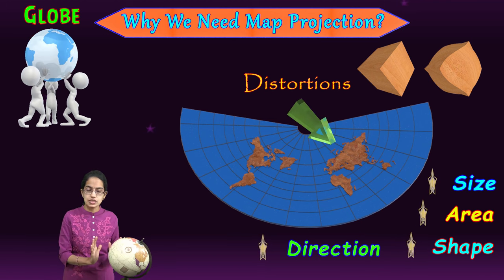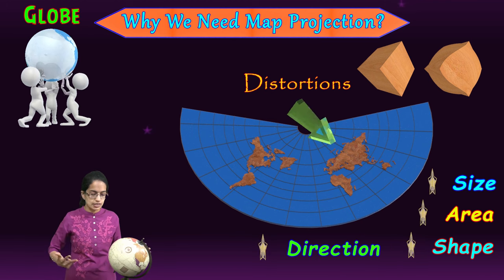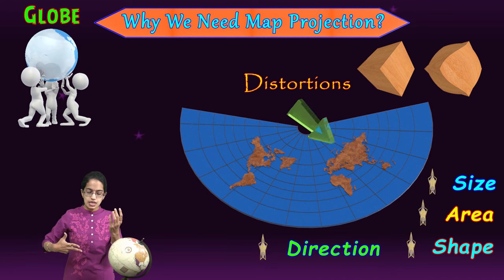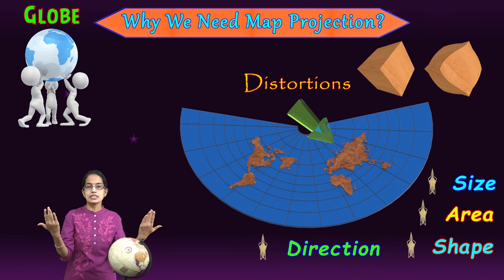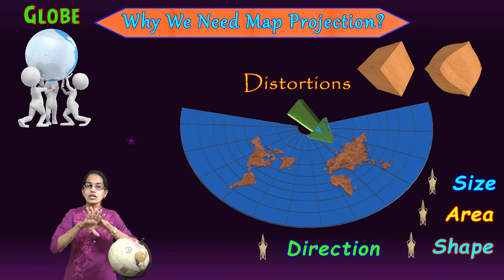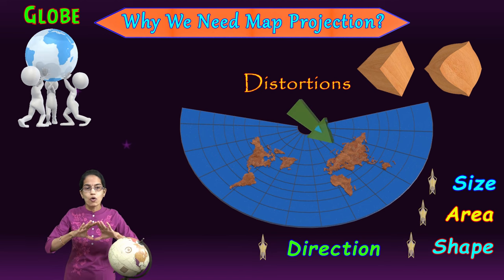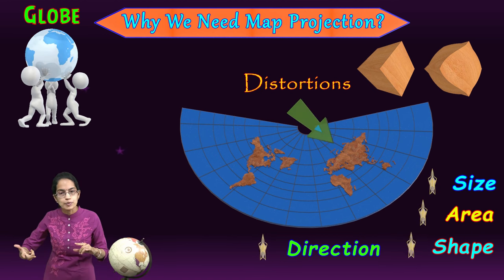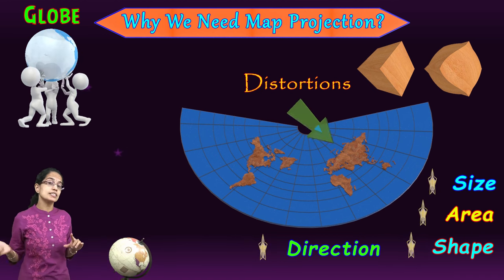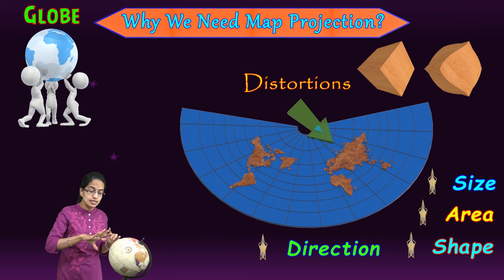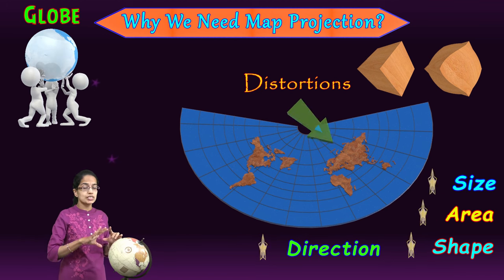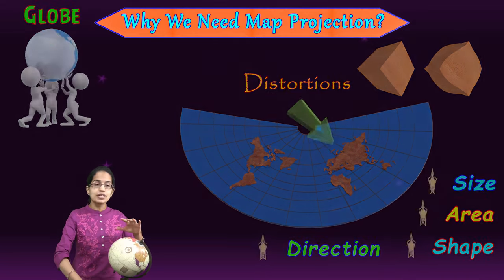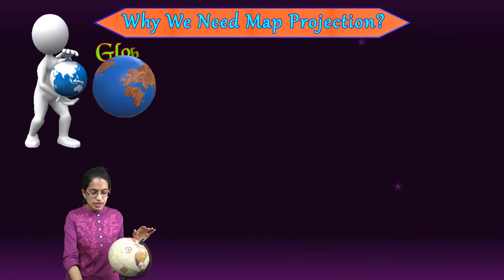Those are the four major distortions seen once you cut a spherical surface and try to represent it on a sheet of paper. Whenever we focus on map projections, there are certain distortions that are seen.